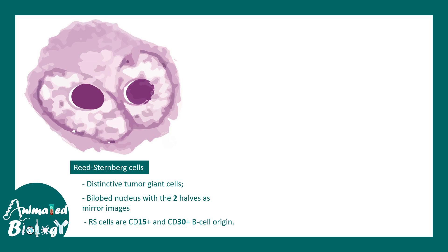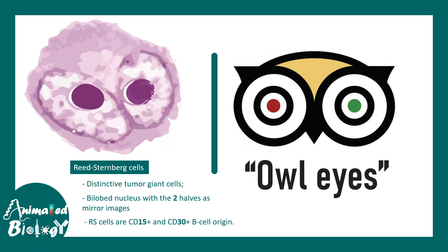Since it's more predictable, prognosis and treatment planning are better. Reed-Steinberg cell is the key histopathological feature underlying Hodgkin's lymphoma. It is a distinctive giant tumor cell. It has a bilobed nucleus with two nuclei and is positive for several markers such as CD15 and CD30, suggesting B cell origin. This particular appearance is known as the owl's eye appearance, where two large nuclei resemble the two big eyes.